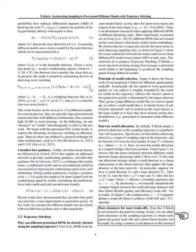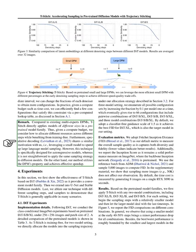Moreover, T-Stitch isn't limited to just two models. We can introduce more models at different intervals to explore a wider range of speed and quality trade-offs. This flexibility lets us tailor the sampling process to specific needs or constraints, like a given time budget. It's worth mentioning that our approach differs from existing methods that use multiple experts within DPMs. T-Stitch directly applies models of varying sizes from a pre-trained family, allowing us to optimize for different steps without additional training.